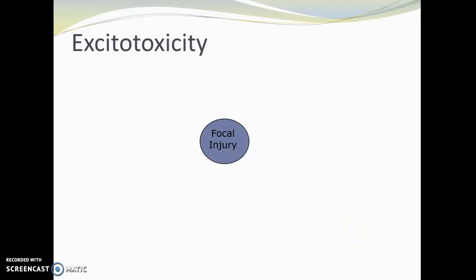We're going to be talking about the process of excitotoxicity. When we think about this process, it's important to realize that this is some sort of incident in the central nervous system — some sort of lesion, some sort of injury. I'm going to be using it in the context of a stroke because I think that's the easiest way to understand it, but there are other things that can cause excitotoxicity.